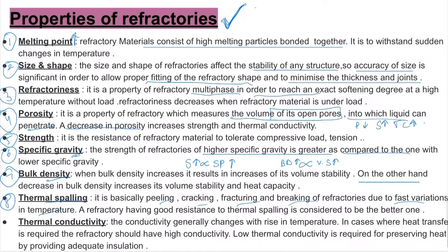The fifth property is strength — it is the resistance of refractory material to tolerate compressive load, tension, etc. The sixth property is specific gravity — the strength of refractories with higher specific gravity is greater, meaning they are directly proportional. The seventh property is bulk density — when bulk density increases, it results in increased volume stability, and when it decreases, it increases volume stability and heat capacity. The eighth property is thermal spalling — this is the peeling, cracking, fracturing or breaking of refractories due to fast variation in temperature. Refractories with good resistance to thermal spalling are considered better. The ninth property is thermal conductivity — conductivity generally changes with rise in temperature. High conductivity is needed where heat transfer is required, and low thermal conductivity is needed where heat preservation and insulation are required.